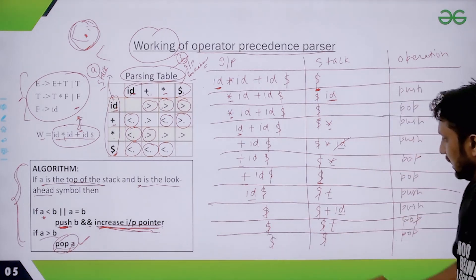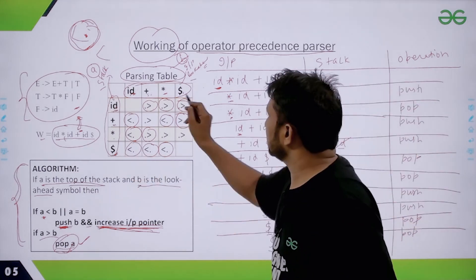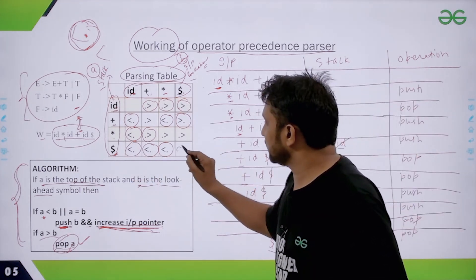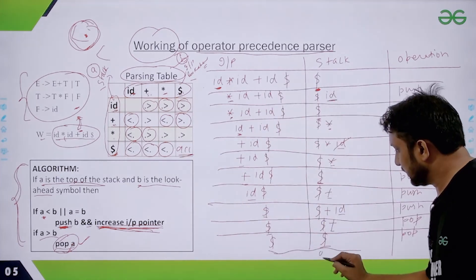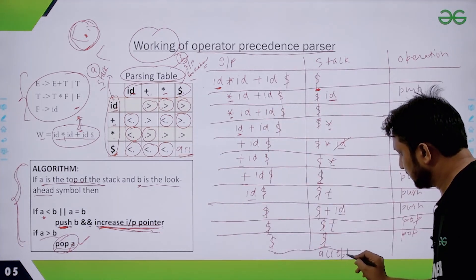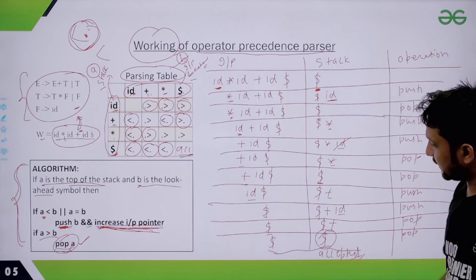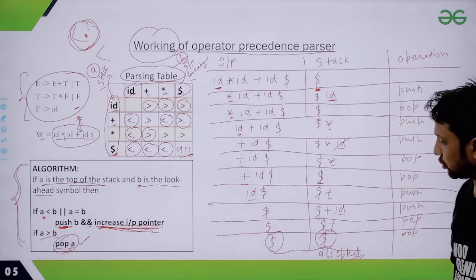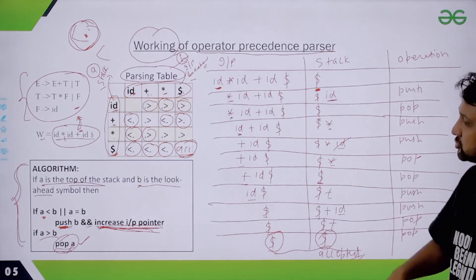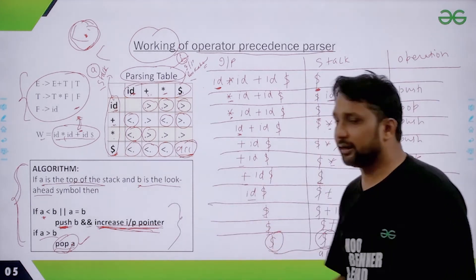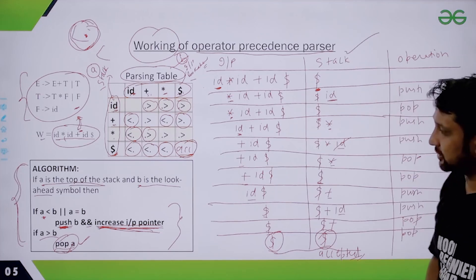After popping plus, only dollar remains on the stack and the lookahead is also dollar. If we get dollar on the stack as well as dollar as the lookahead symbol, then the string is accepted. This is how the operator precedence parser works — these two steps of comparing and pushing or popping repeat again and again.